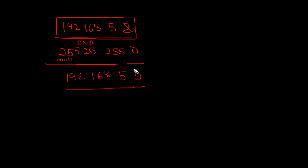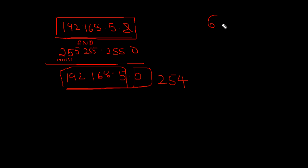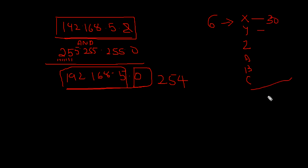In this network, 254 hosts are possible. But I have 6 branches — branch X, Y, Z, A, B, and C — 6 branches total. Each branch has a capacity of 30 computers. So in total, that is 180 computers.